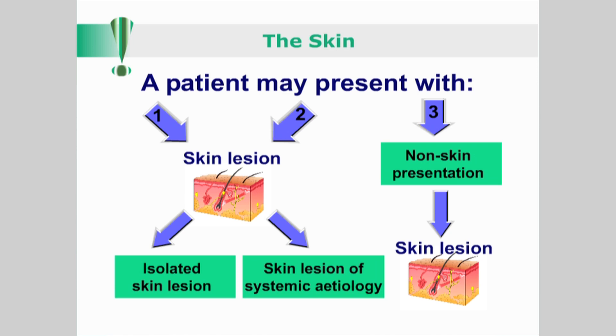There are three scenarios which you must bear in mind when dealing with the skin. Firstly, a patient may present with an isolated local skin lesion, for instance the fungal infection of tinea pedis. Secondly, a patient may present with a primary skin lesion, as in the above example, but with a more systemic etiology, as in a diabetic patient.